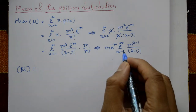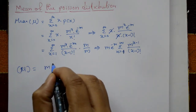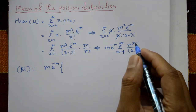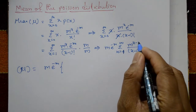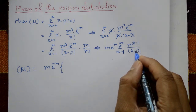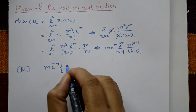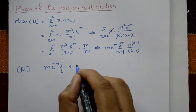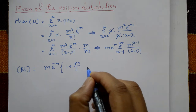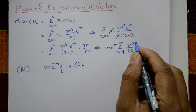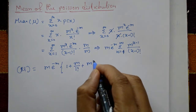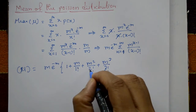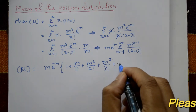So mu equals m times e raised to minus m, times the summation. Substituting x equals 1, 2, 3 up to infinity: for x equals 1, m raised to 0 over 0 factorial equals 1; for x equals 2, m raised to 1 over 1 factorial equals m; for x equals 3, m squared over 2 factorial; then m cubed over 3 factorial, and so on.